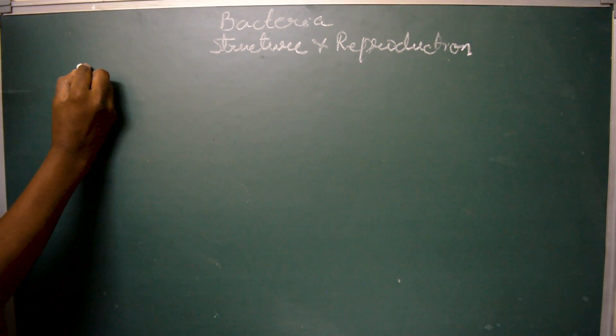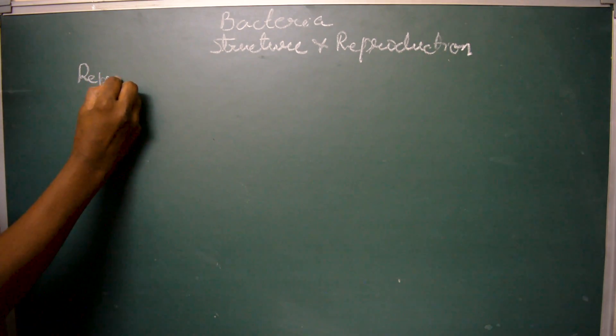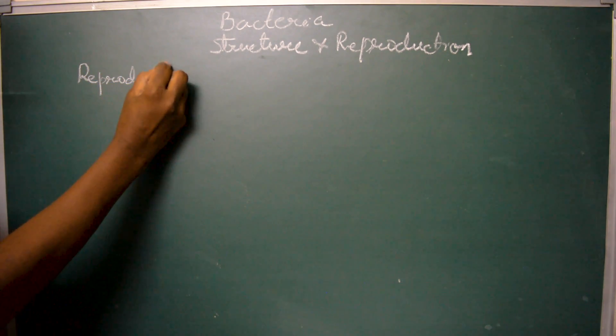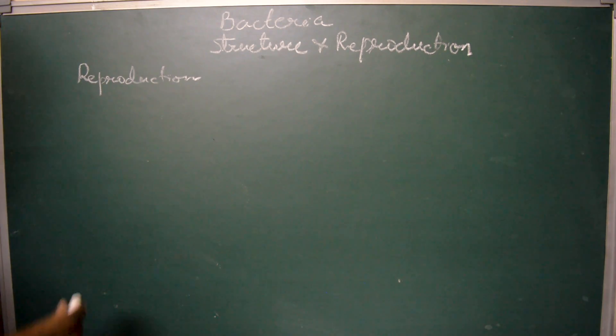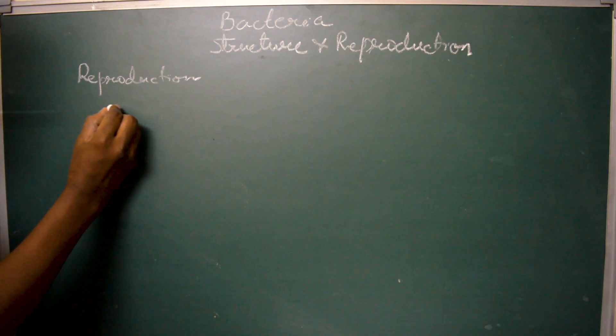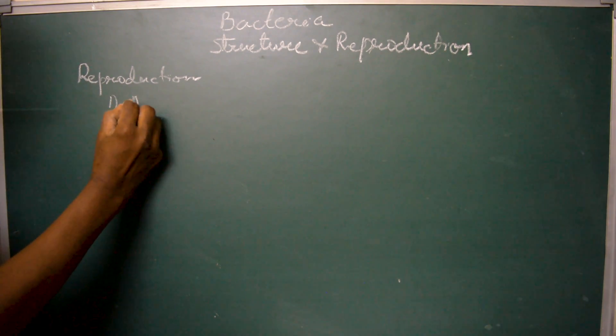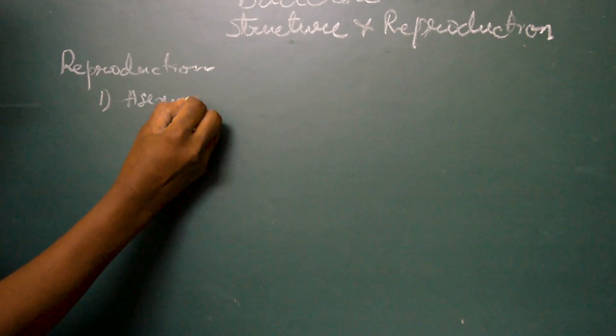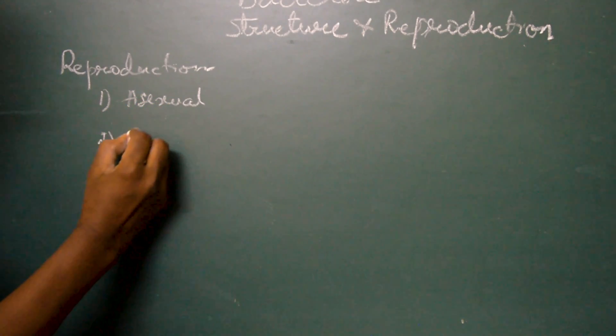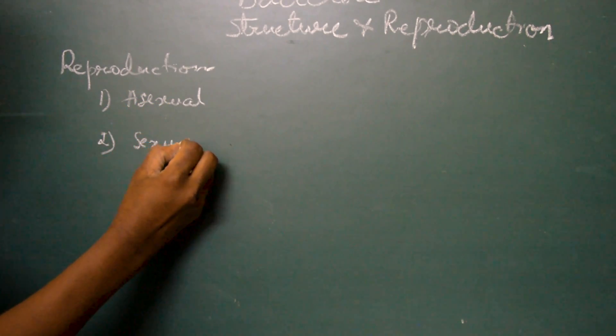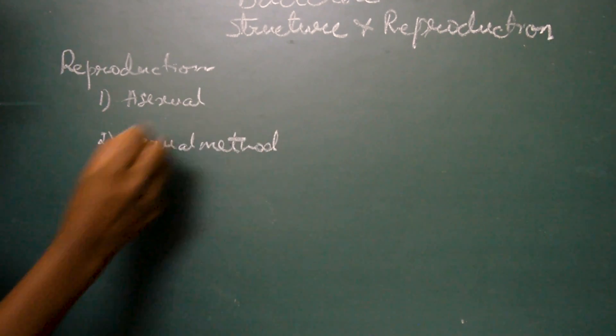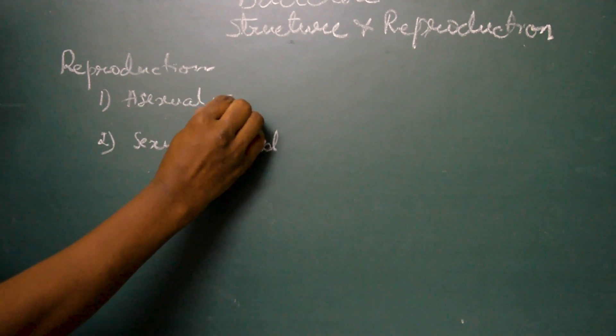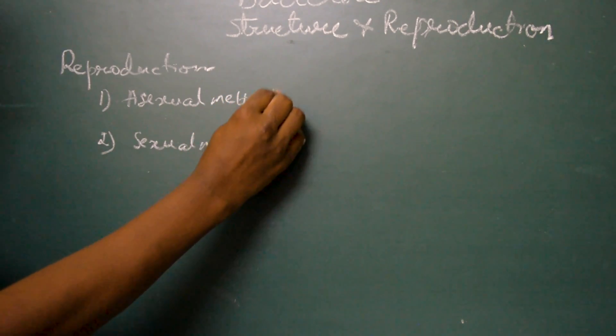The next character is reproduction. It is the general discussion on reproduction in bacterial cells. Bacterial cells reproduce by asexual and sexual methods.